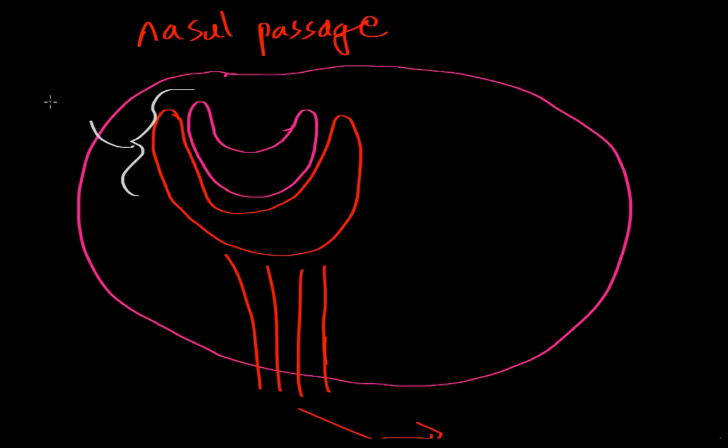So within this vomeronasal system, there are different cells. So there are some cells that are situated down here and they actually send a projection all the way up to this top zone over here. So we've got these cells. Since they're situated underneath, this bottom zone are known as basal cells. And there are other cells that are over here and they just have short little projections. And these are known as apical cells. So apical cells are in yellow. And this over here is a basal cell.